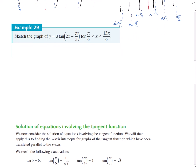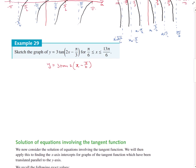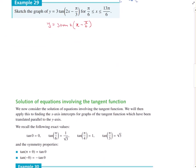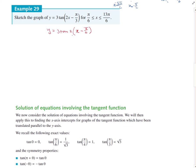Moving on. When you do these ones — y = 3tan(2(x - π/6)), take the 2 out as a common factor. So it's like 3tan(2x), but it has been shifted π/6 to the right.